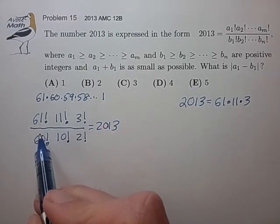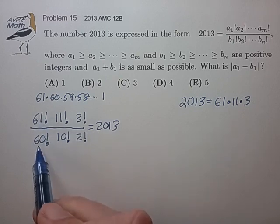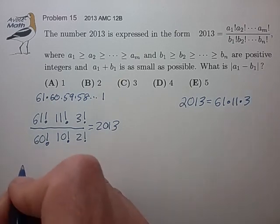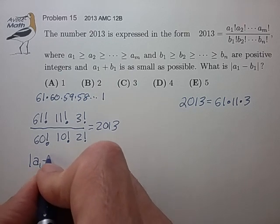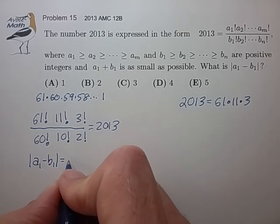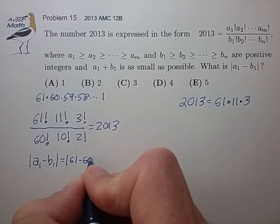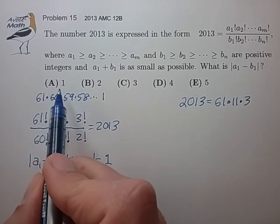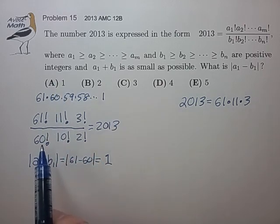And that looks to form 2013. The sum of A1 and B1 looks to be reasonably small, and the absolute difference A1 minus B1 is 61 minus 60. And that's the number 1. And that answer choice does show up. But let's see if we can do better than this.